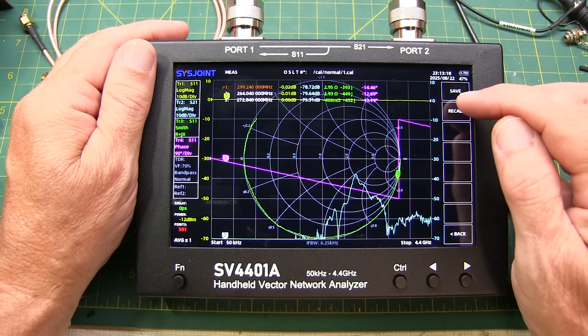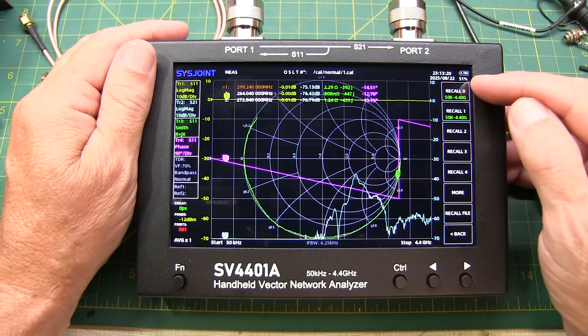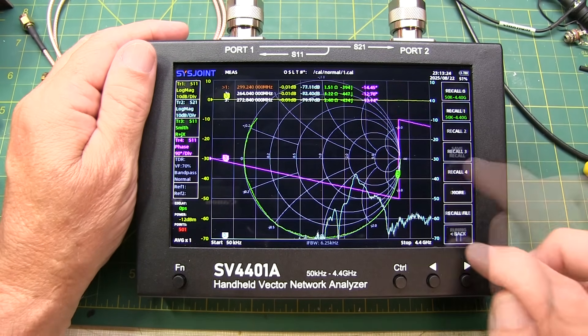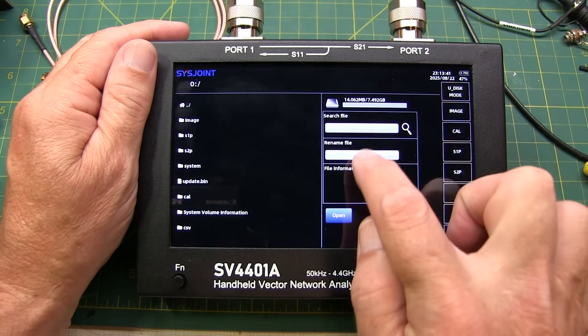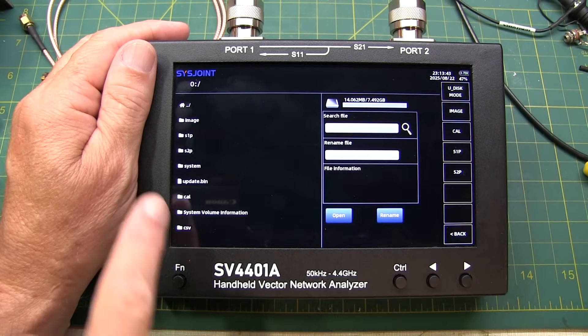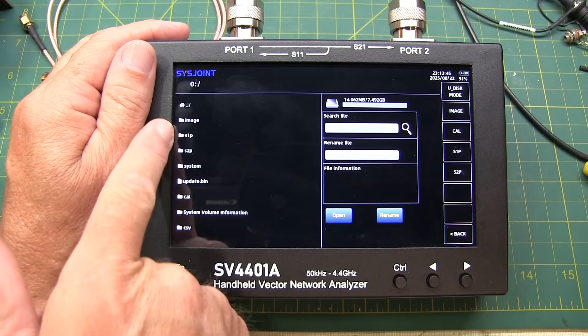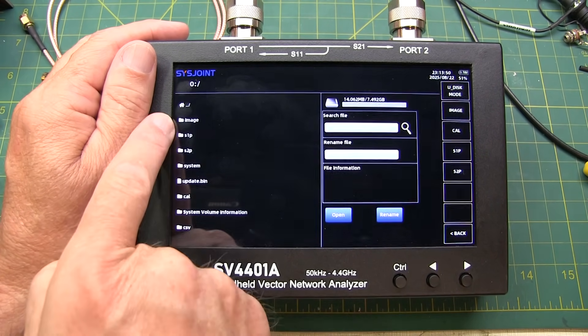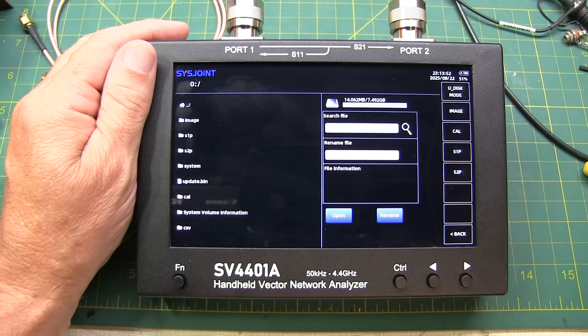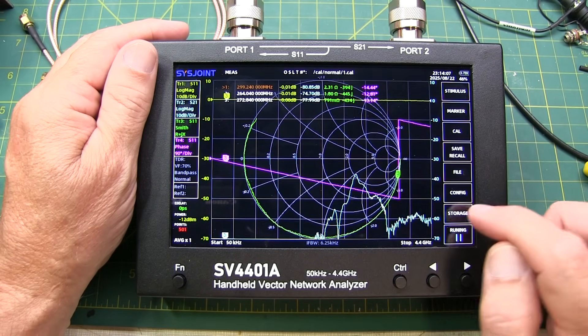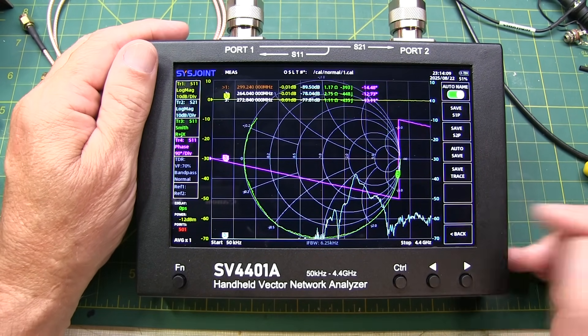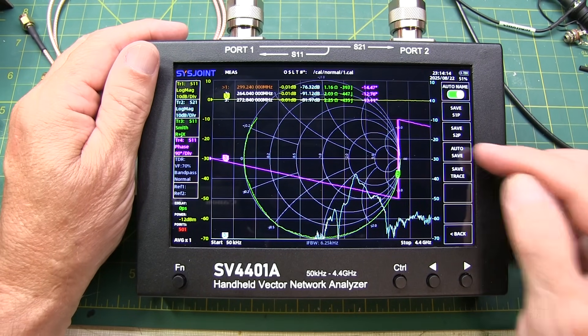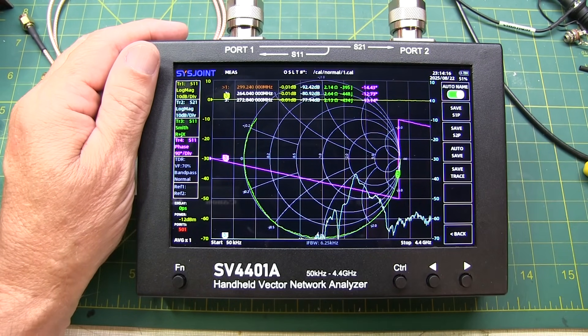The save and recall allows you to save and recall various settings, including calibration settings and things like that. The file menu allows you to go in and look at files that you may have stored, such as S-parameter files like S1P and S2P files, and even CSV files and image files that you can save on the instrument. And the saving of those files is all enabled through this storage button here. You can save the S1P, S2Ps, and also save traces as CSV files.